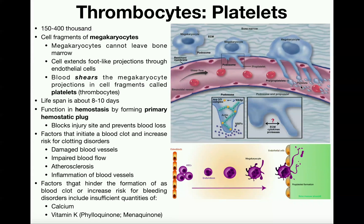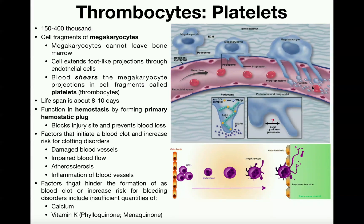So ultimately what you get are these little platelets that fragment off. If you think of the megakaryocyte like a plate — if you were to throw a plate on the ground it's going to shatter into a million little pieces, and those would be platelets. I like to think that these are the fragments of a large dinner plate, so maybe that'll help you remember it.